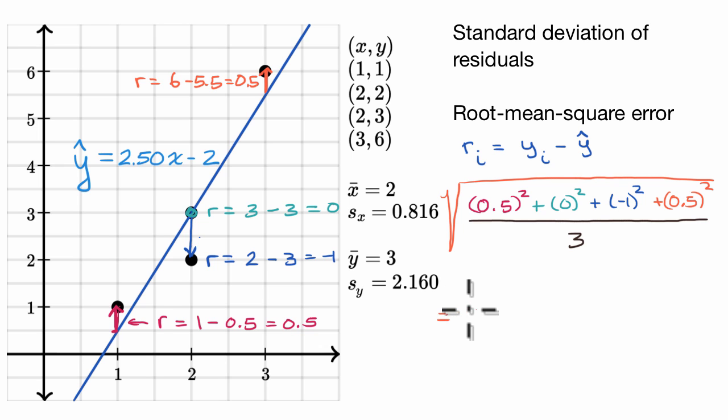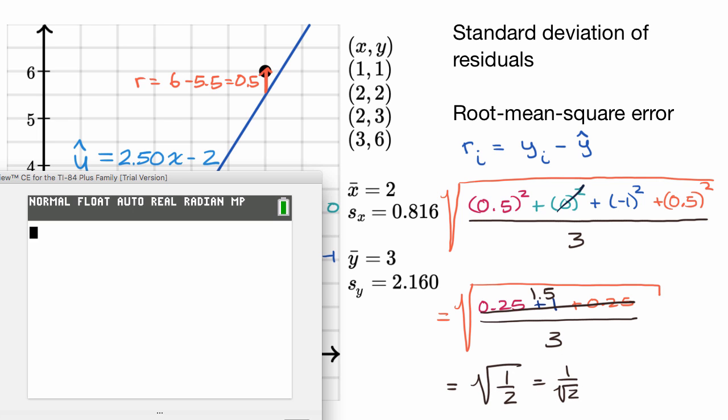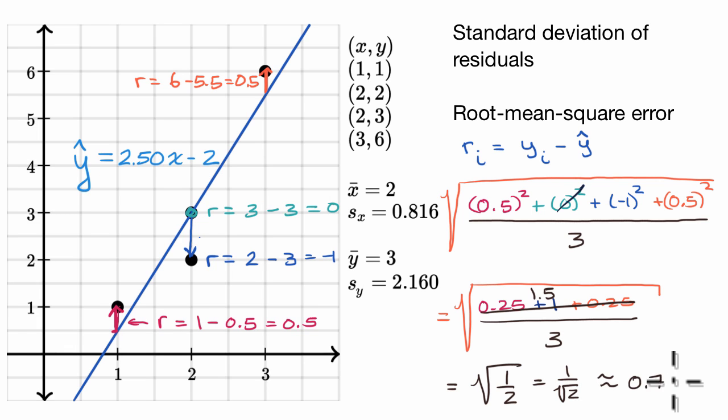This is going to be equal to square root of: this is 0.25, this is just zero, this is going to be positive one, and then this 0.5 squared is going to be 0.25. All of that over three. Now this numerator is going to be 1.5 over three. So this is equal to the square root of one half. This is one over the square root of two, which gets us to, if we round to the nearest thousandths, approximately 0.707.